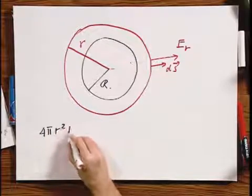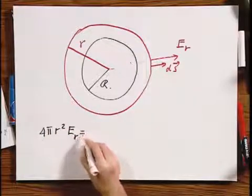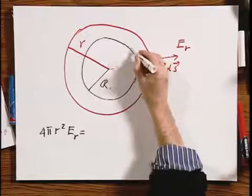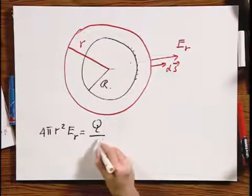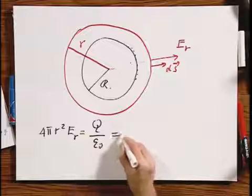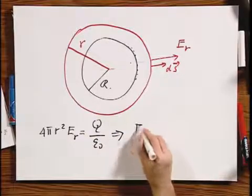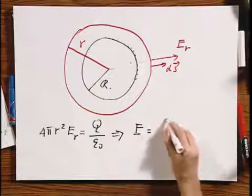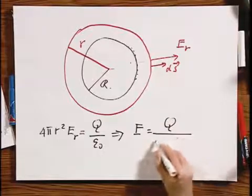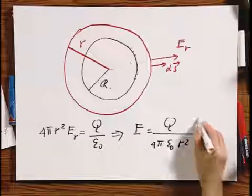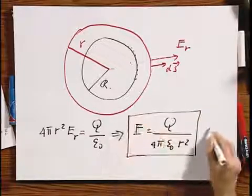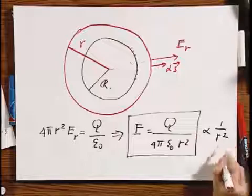4 pi r squared E of R equals all the charge, which we know now is at the surface, uniformly distributed at the surface, Q divided by epsilon zero. And so we find that E equals Q divided by 4 pi epsilon zero R squared. Famous results inversely proportional to R squared.